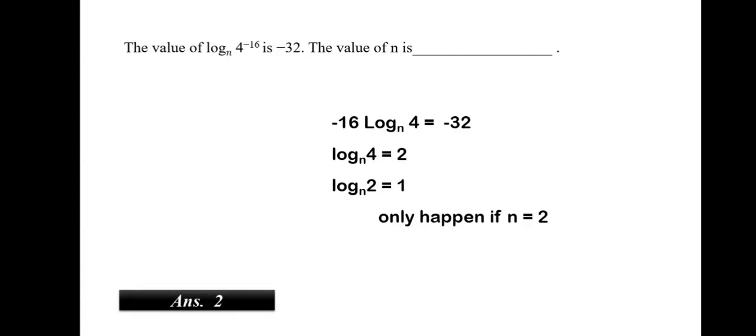The value of log base n of 4 to the power minus 16 is minus 32. The value of n is. Now, we know we can write this in another form. We can write it in the form of minus 16 log base n of 4 will be equal to minus 32. Now, we remove the minus 16 and 32 by dividing the whole thing by minus 16. Thus, we get it as log base n of 4 is equal to 2. Now, again for the division, we see that log base n of 2 is equal to 1. This can only happen if the base is equal to the integer which we have. Thus, n should be equal to 2.